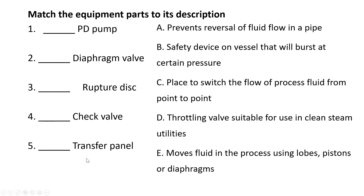We're going to start off with the matching section. PD pumps are E — they move fluids in the process using lobes, pistons, or diaphragms. Diaphragm valve is D, a throttling valve suitable for use in clean steam utilities. A rupture disc is B, a safety device on a vessel that will burst at a certain pressure. Check valves are A, they prevent the reversal of fluid flow in a pipe. And transfer panel is C, a place to switch the flow of process fluid from point to point.